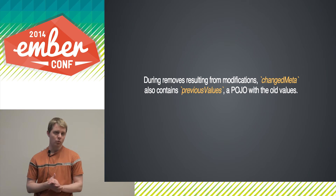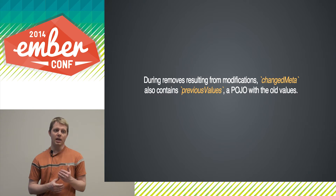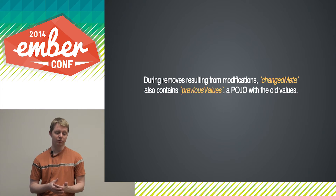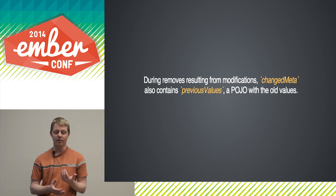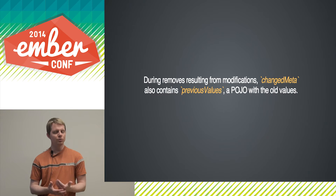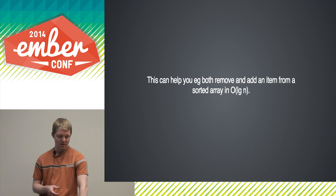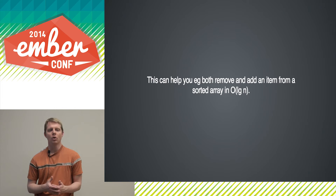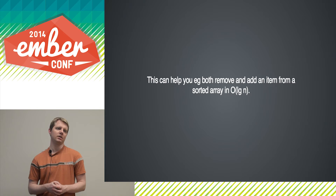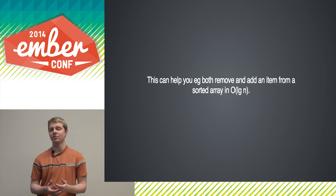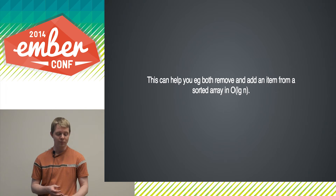One difference when an item is removed as a result of a property change is that changeMeta also includes previousValues, which is a plain JavaScript object keyed on the properties that changed with the old values. Usually when you do a set, this will have exactly one key-value pair. The old value is useful when it can help you do a removal better — the simplest example is sort, where if you have the old value during removal, you can remove something efficiently in O(log n), just as with the new value during addition.